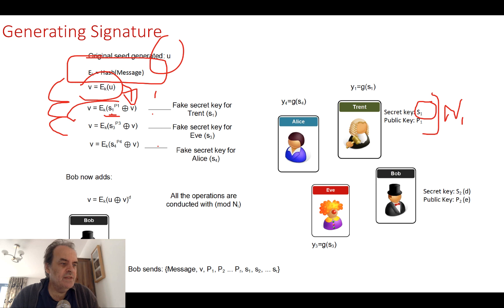V then goes into the next stage. And now we take Eve's fake secret key, we raise it to the power of her public key, and we XOR with v again. That becomes our new v. And we feed that into the next stage which is now Alice. We take a fake key for Alice, we raise it to the power of her public key, and then we XOR with the value that we've got for v. We end up with v.